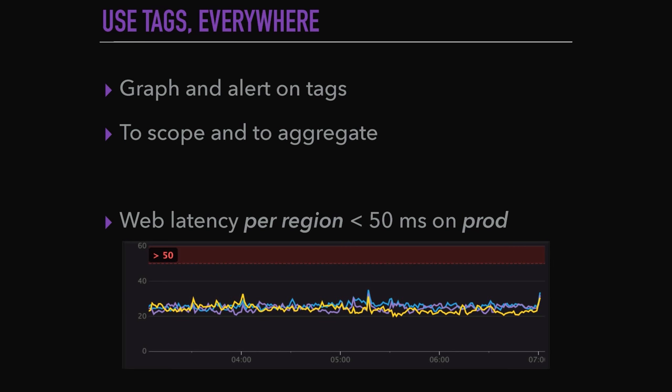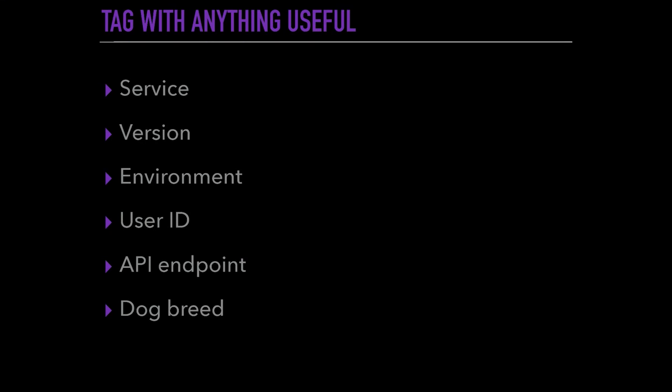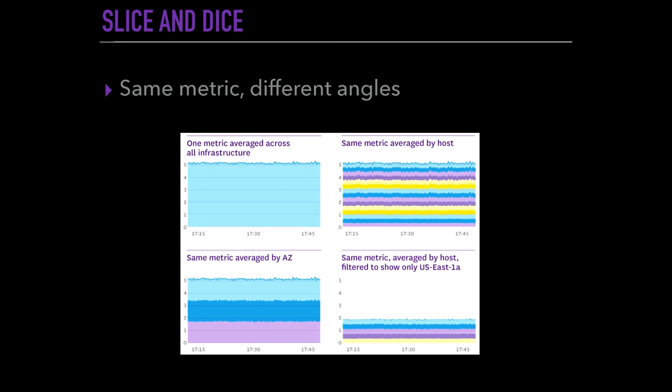Whenever you are graphing something, whenever you are sending an alert, you'll always use tags to scope — let's say on your pod environment — or to aggregate on top of a specific geographic region or a specific service. Tags can be anything: version, environment, user-specific things. That will allow you to slice and dice a single metric and have different angles of view.